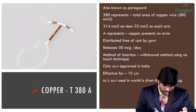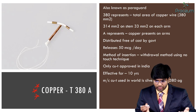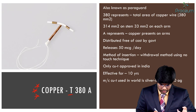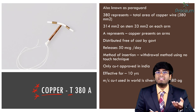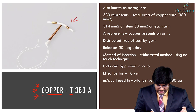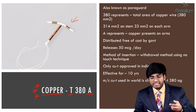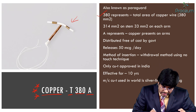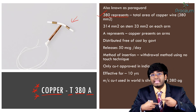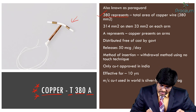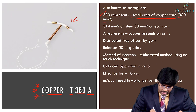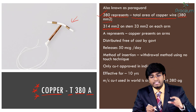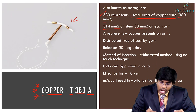Let's understand the name Copper T380A. It's called 'Copper' because it has copper around its stem and arms; 'T' because it is T-shaped. The '380' represents the total surface area of the copper wire — 380 mm². Of this, 314 mm² is on the stem, and 33 mm² is on each arm.